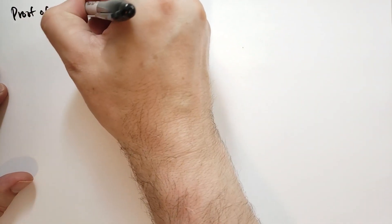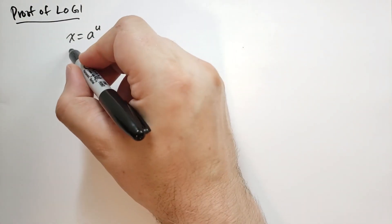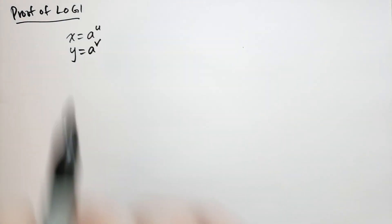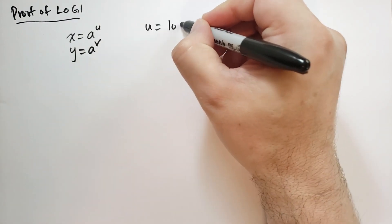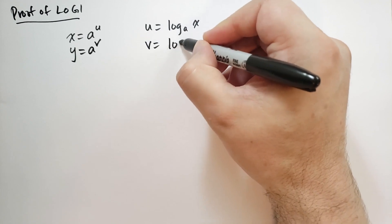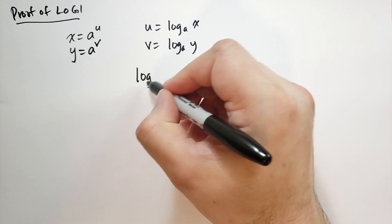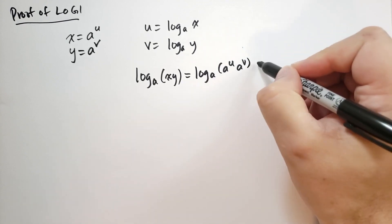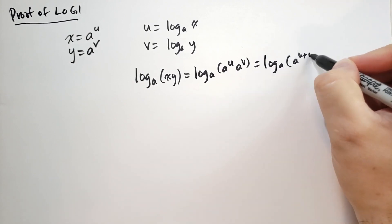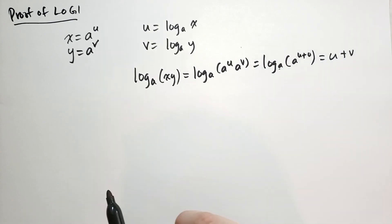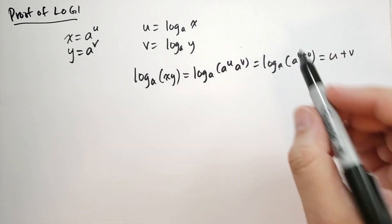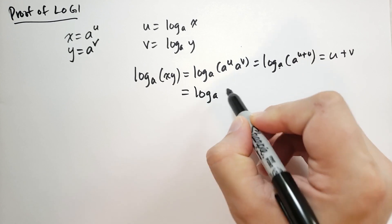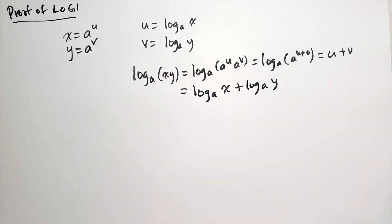Let's prove log rule 1. In order to prove log 1, we're going to have two numbers. We're going to have x equals a to the u and y equals a to the v. And so u is equal to log base a of x and v is equal to log base a of y. So when we take the log base a of xy, that is the same as log base a of a to the u times a to the v, which is the same as log base a of a to the u plus v. And so this gives us u plus v. What is u? u is the log base a of x and v is the log base a of y. So this is equal to log base a of x plus log base a of y. That is basically the proof there.